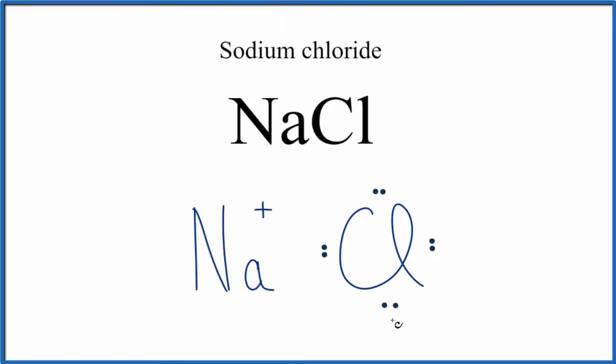The chlorine gained that electron. Electrons are negative, so the chlorine's now negative. By convention, we should put brackets around the negative ion. You'll also sometimes see brackets around the positive ion as well. That makes this the Lewis structure for NaCl, sodium chloride.